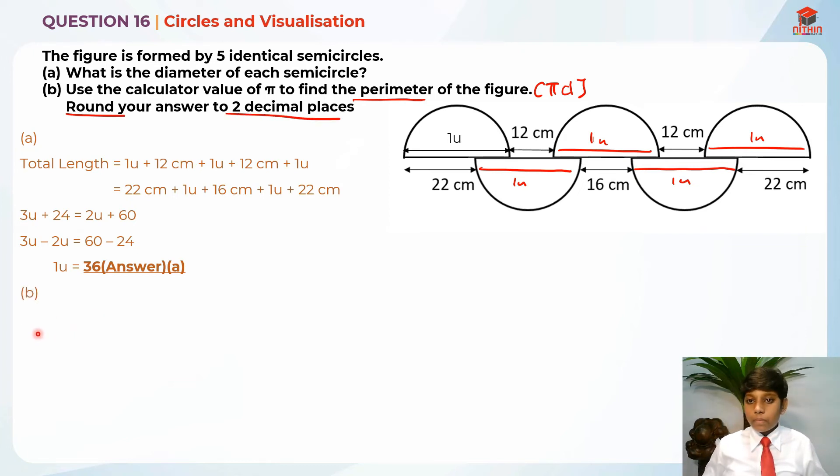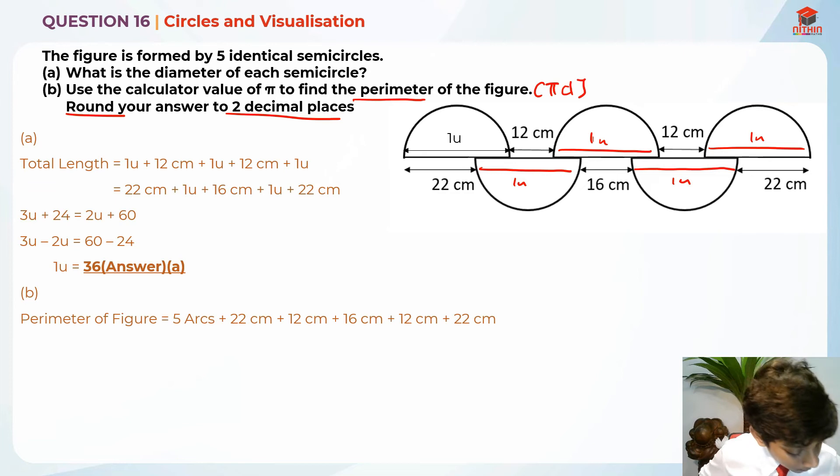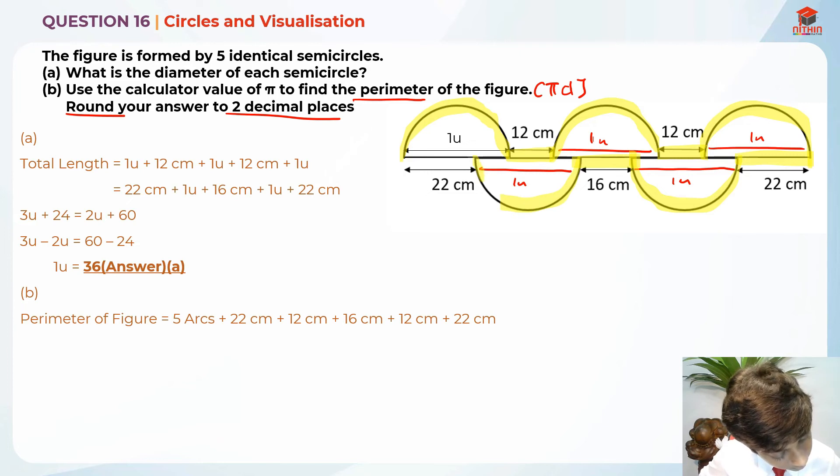For part B, I'm going to find the perimeter of the figure, which is 5 arcs plus 22 cm plus 12 cm plus 16 cm plus 12 cm plus 22 cm. Let me highlight the perimeter: 1 arc, 12 cm; 2 arc, 12 cm; 3 arc, 22 cm; 4 arc, 16 cm; 5 arc, 22 cm. This is the perimeter.